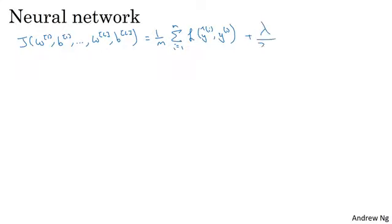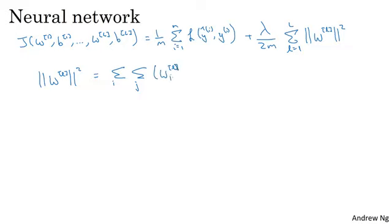So to add regularization, you add lambda over 2M times the sum over all of your parameter matrices W of their squared norm. This norm of a matrix, really the squared norm, is defined as the sum over i, sum over j, of each of the elements of that matrix squared. If you want the indices of the summation, this is sum from i equals 1 through nL minus 1, sum from j equals 1 through nL, because W is an nL by nL minus 1 dimensional matrix, where these are the number of units in layers L minus 1 and layer L. So this matrix norm, it turns out, is called the Frobenius norm of a matrix, denoted with F in the subscript.